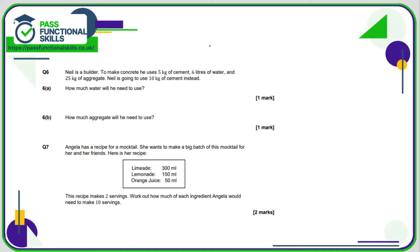Question number six: we know it's five kilos of cement, six liters of water, and 25 kilos of aggregate. So if he's using 10 kilos of cement, that is twice the five kilos mentioned. Therefore, he's going to need twice as much water, so six times two is 12, and he'll need twice as much aggregate as well, so that's 50 kilos.